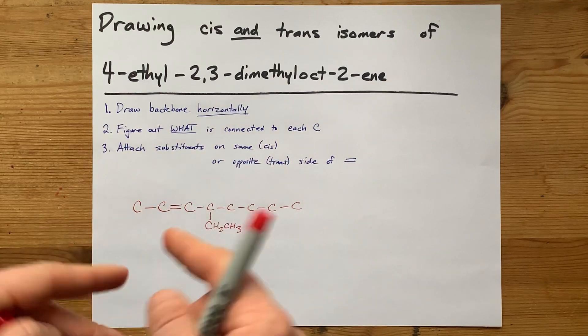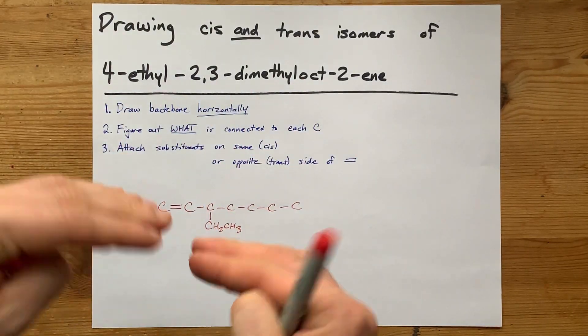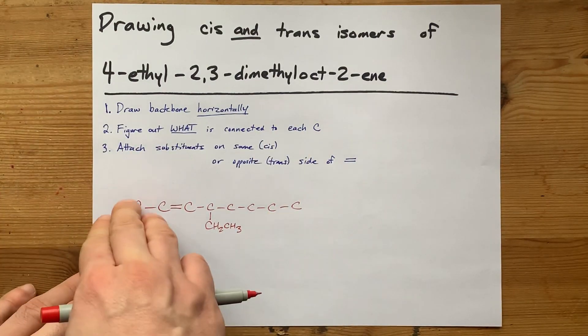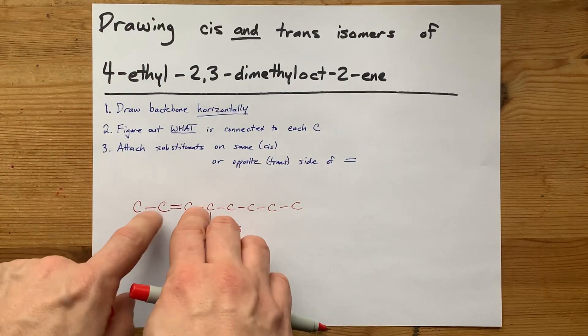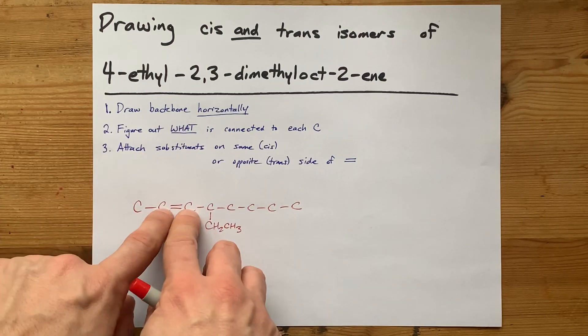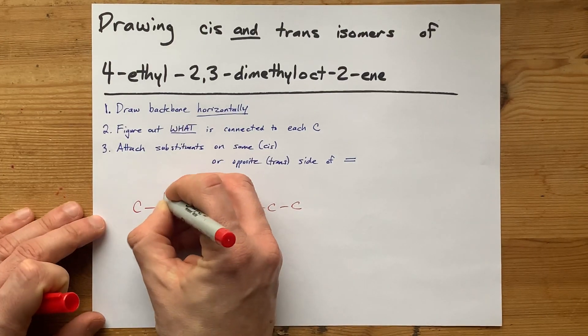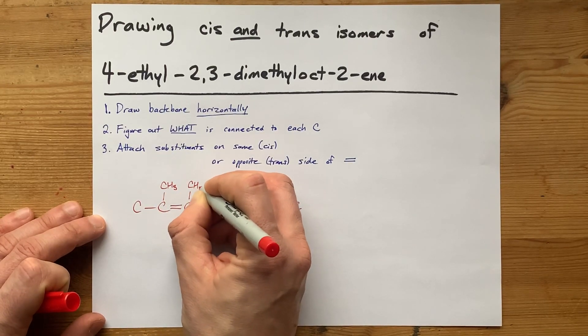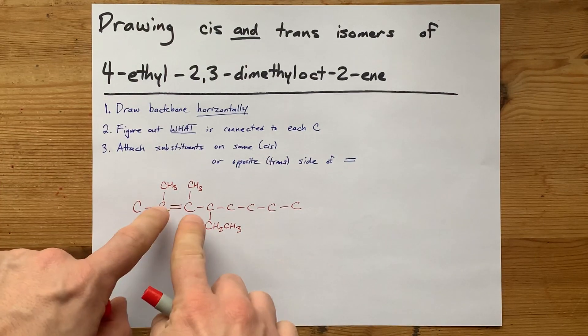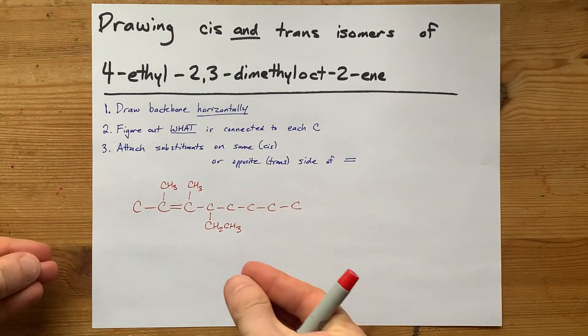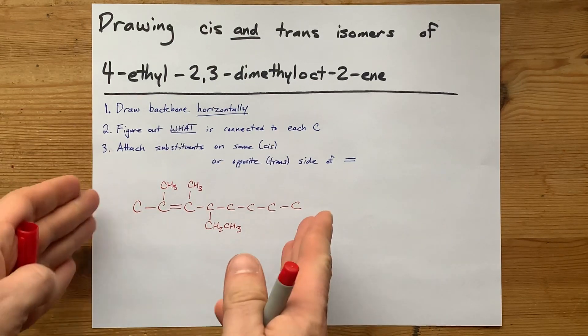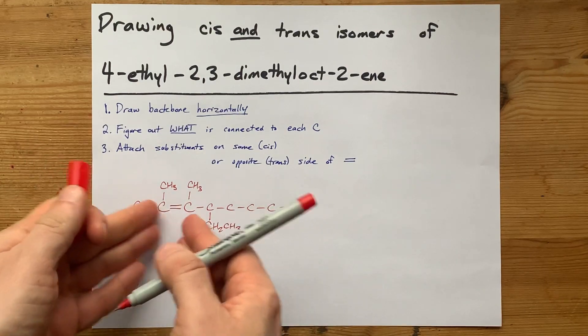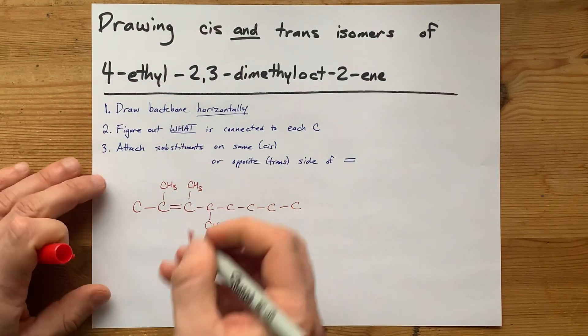Cis means that you'll find those two things, those two methyl groups, on the same side of the double bond. And when I say same side, I mean if it's drawn horizontally like this, they're both on the top side or both on the bottom side. Now, I'm going to put them both on the top side. A methyl group is a CH3, and then here's another CH3. Again, the molecule is not officially bent exactly this way. These bond angles are supposed to be 120 when you have a double bond like that, but this helps the teacher realize that you know what cis is.